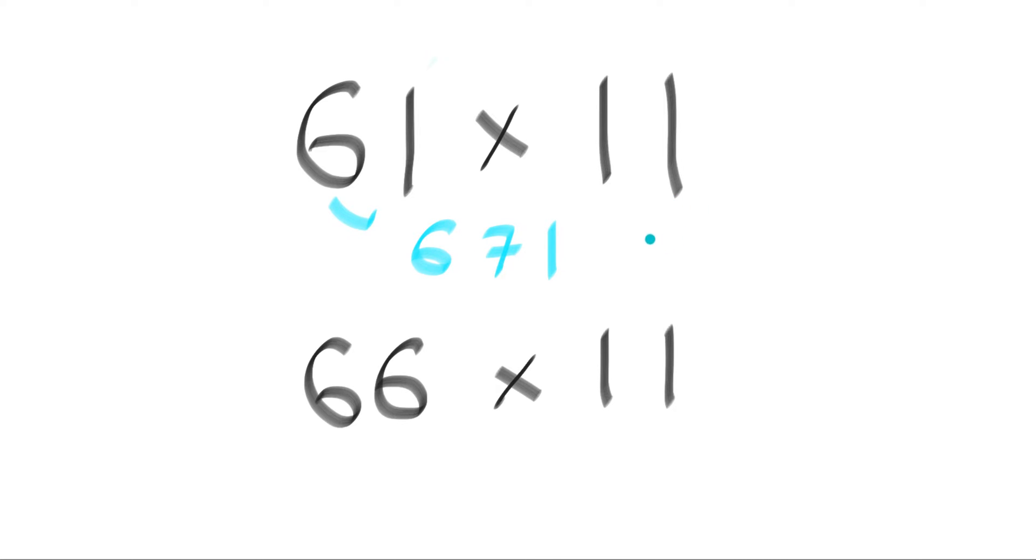That is easy as long as these two digits add up and you get a single digit. Now, what happens when you have 66 times 11?